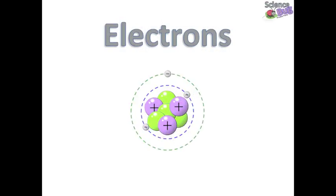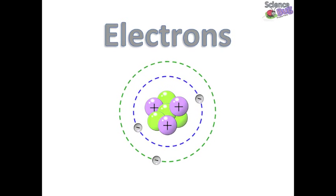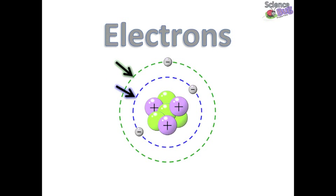The electrons orbit around the nucleus. These orbits are also known as energy levels. Here we can see energy levels 1 and 2. The outermost electrons are called the valence electrons. They have most of the energy and determine how the atom will bond with other atoms to form compounds.